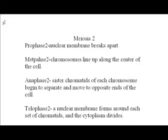Prophase 2: the nuclear membrane breaks apart. Metaphase 2: chromosomes line up along the center of the cell. Anaphase 2: sister chromatids of each chromosome begin to separate and move to opposite ends of the cell. Telophase 2: a nuclear membrane forms around each set of chromatids and then the cytoplasm divides.